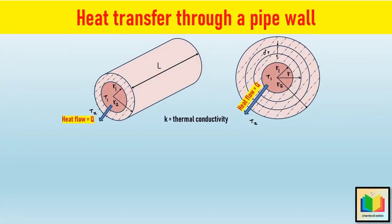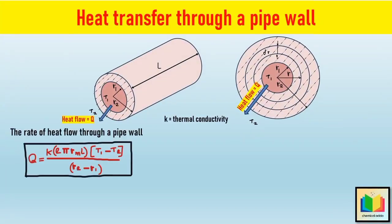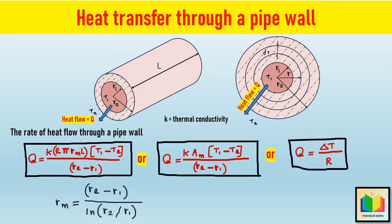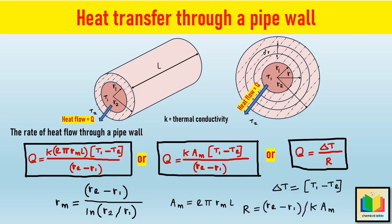Finally, we have three forms of equations to calculate heat transfer through a pipe wall, where r_m is the log mean radius of the pipe, A_m is the log mean cross-sectional area, ΔT is the temperature drop or temperature difference, and R is the thermal resistance offered by the cylindrical pipe wall.